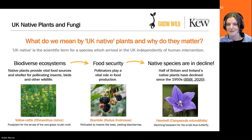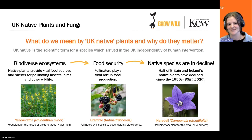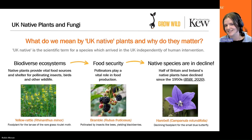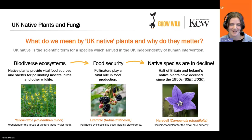Pollinators are really important for food production. Without lots of diverse, healthy pollinators, our food security would be at risk — including plants like the bramble, which is where we get blackberries from, and which is pollinated by insects like bees, butterflies, and moths. Another key reason we want to champion UK native species is because they're in decline. Half of Britain and Ireland's native plants have declined since the 1950s, such as the harebell, which is a food plant for the small blue butterfly and is sadly declining. That's why we're asking you to join us on our mission — we have a diverse range of native plants in this country and we really want to champion them.